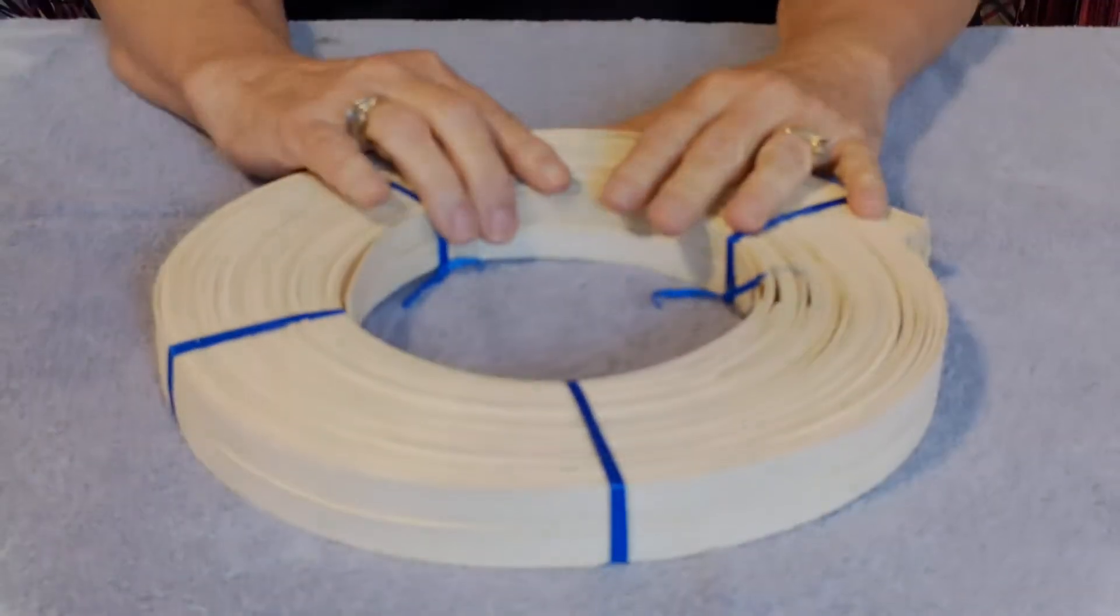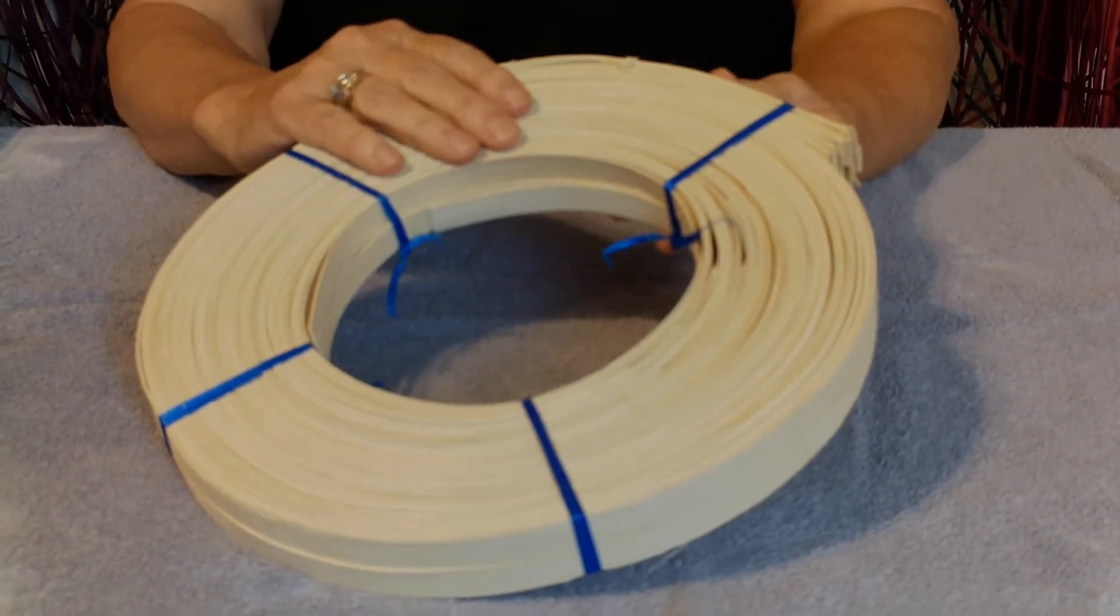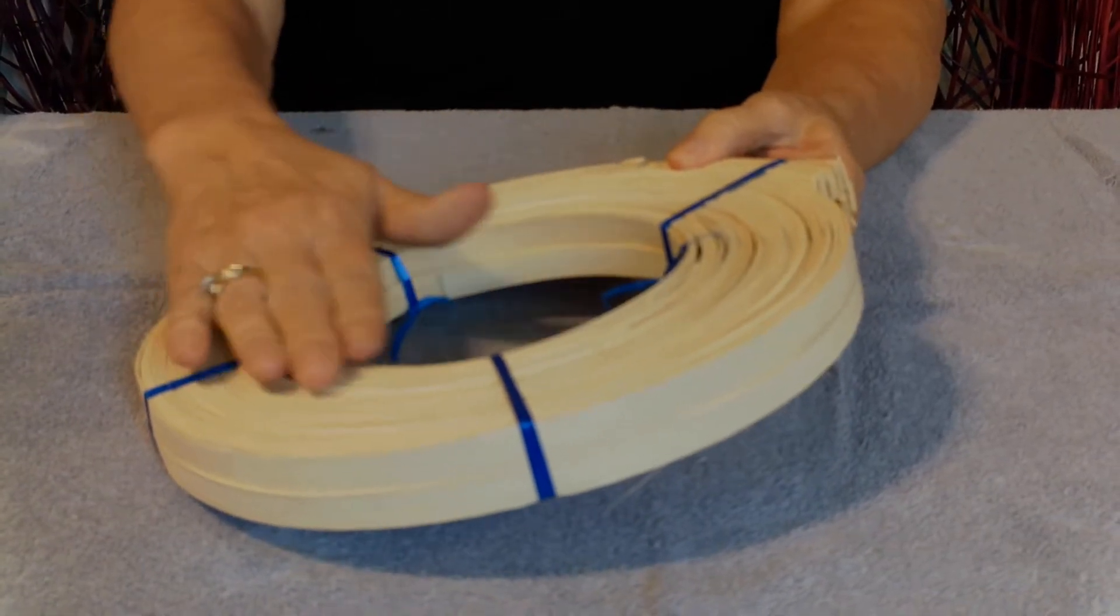Welcome back to Basket Making 101. In this segment, I'm going to be talking to you about flat reed. This is a coil. One pound is the size that these come in, and this is how it comes.